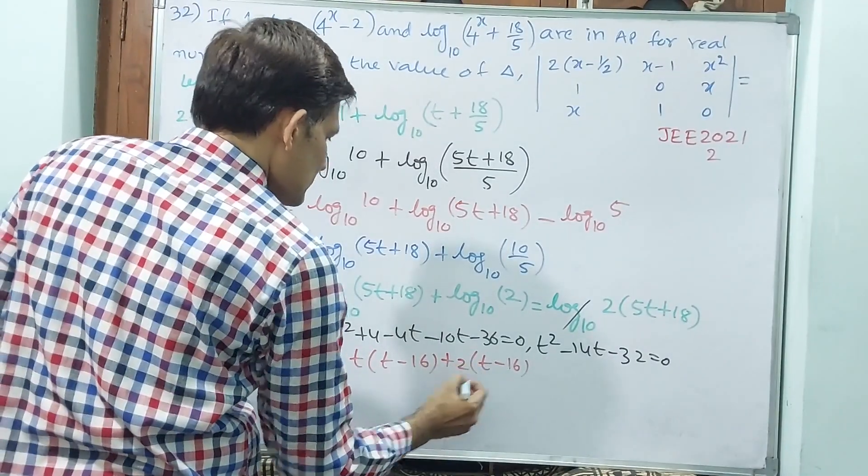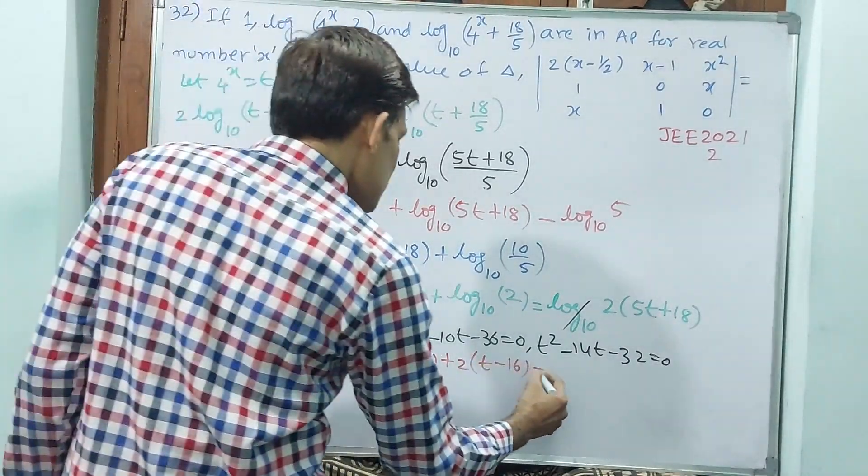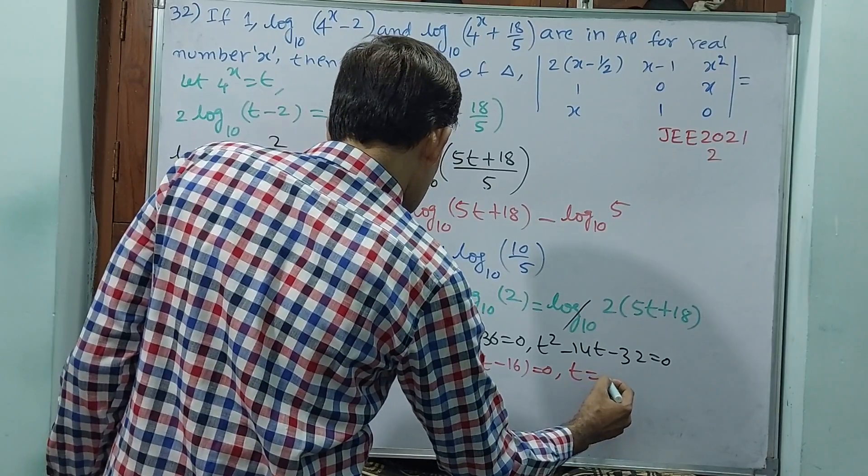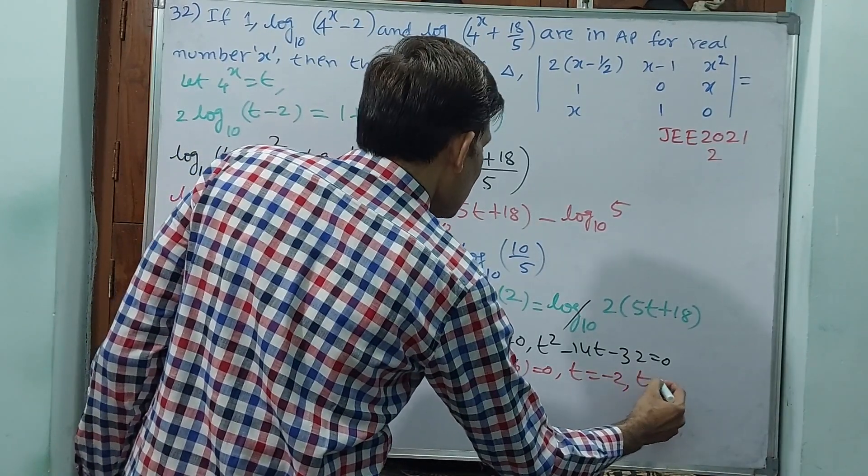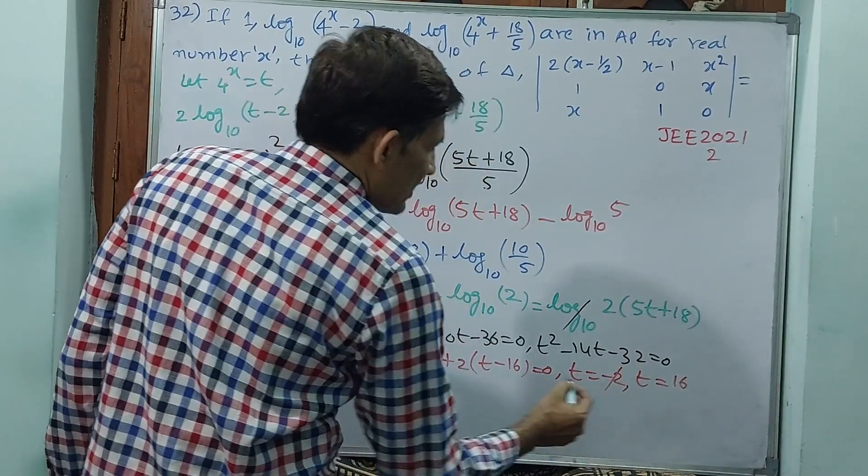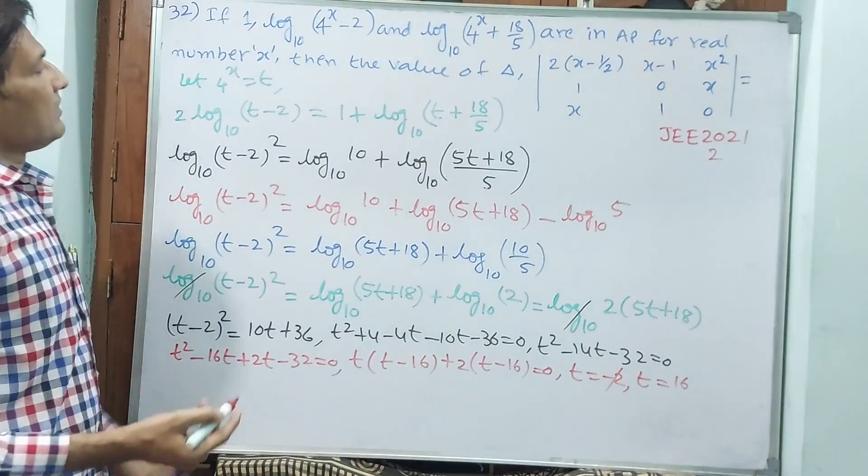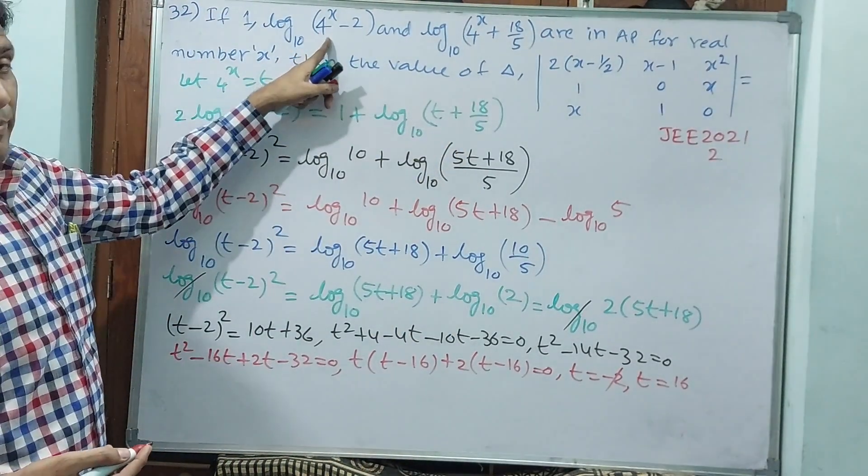T² - 16t and +2. T is equal to -2. T is not valid. Okay, why? Do the t is -2 means, see, 1/16 will come. 1/16 is less than 1, less than 2. Negative input you cannot give.